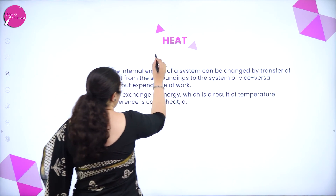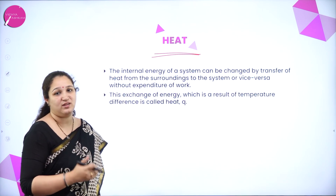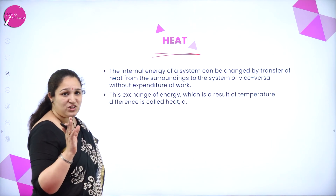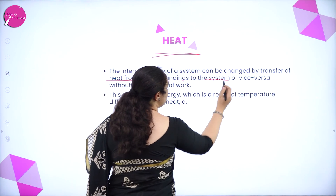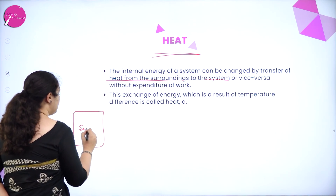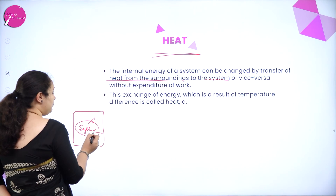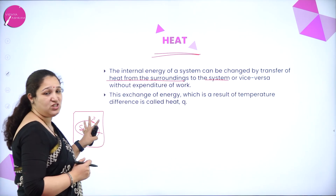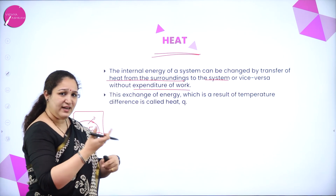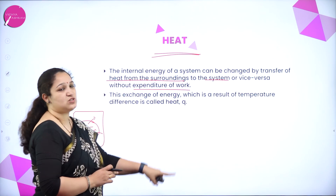Next is about heat. The exchange of heat will also produce a change in the internal energy. The internal energy of the system can be changed by transfer of heat from the surrounding to the system or vice versa. Heat can go from the system to the surrounding or it can come from the surrounding to the system. This is an internal energy change which can happen without the expenditure of work — only heat is getting exchanged. This exchange of energy which is a result of temperature difference is called heat.